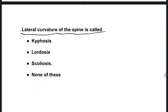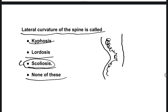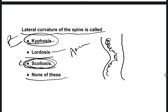The next question: lateral curvature of the spine is called what? Options are kyphosis, lordosis, scoliosis, or none of the above. The right answer is option C — scoliosis. Scoliosis is the lateral curvature of the vertebral column. Lordosis is anterior curvature, and kyphosis is posterior curvature of the vertebral column.